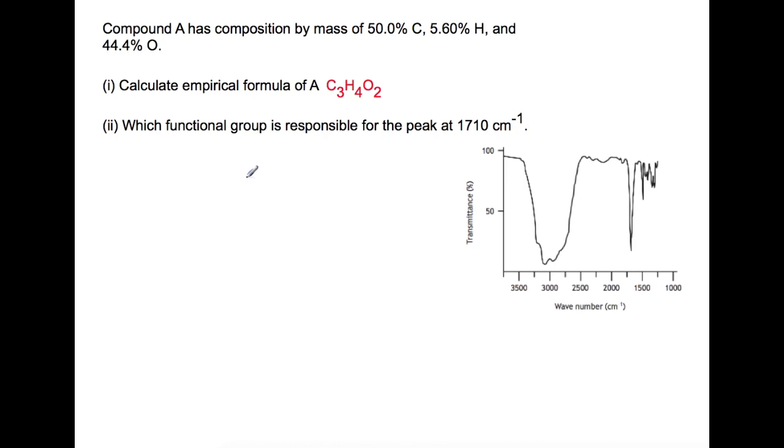Looking at part 2, what functional group is responsible for the peak at 1710? So again, looking in the data book, and we're looking for this peak here. This is a very characteristic peak and is almost always a carbonyl at 1710. It would be worth noting that we also have a very broad peak here at around about 3000, which would be an OH group, so that may come in handy later.